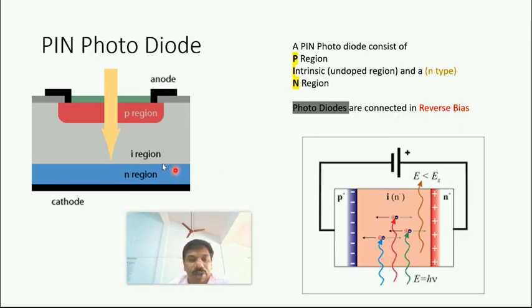Whenever you come across a question in the KTU on PIN photodiode, you must draw these two figures. N plus means a highly doped N region, P plus means lightly doped P region. In between there is a lightly doped I region, so it is connected in reverse bias. These two figures are important from examination point of view.